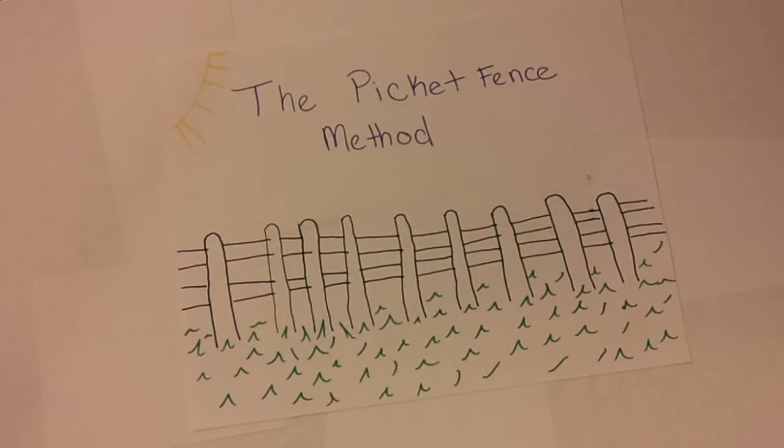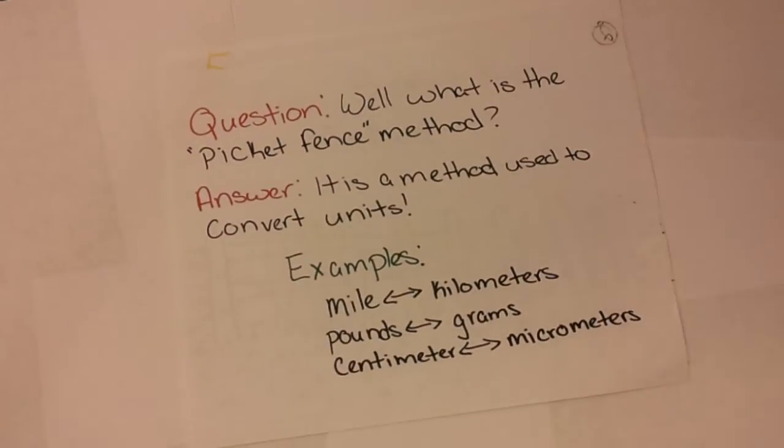The first question you may ask yourself is, well, what is the picket fence method? The answer is it's pretty much a method used to convert units. For a couple examples you have miles to kilometers or kilometers to miles, pounds to grams, grams to pounds, or centimeters to micrometers and micrometers to centimeters, and it goes on and on forever.